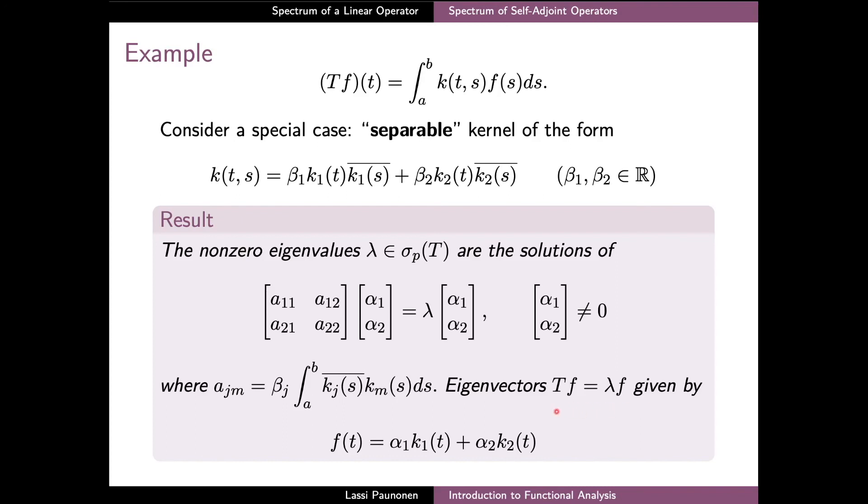the eigenvalue equation implies that any eigenvector corresponding to a non-zero λ must also be a linear combination of k₁ and k₂ with some coefficients α₁ and α₂. If we then substitute this form of f back into the eigenvalue equation, we can derive the condition for the coefficients α₁ and α₂, which turns out to be precisely the two-dimensional eigenvalue problem.